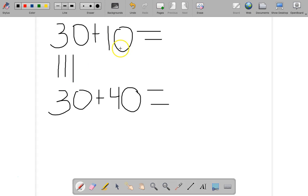I have 10, and I know I need to add one more 10. So if I add one more 10, it's easy to see that is going to be 40.